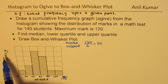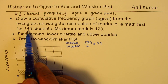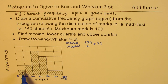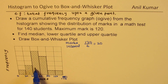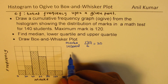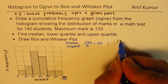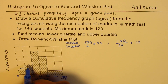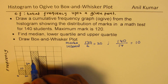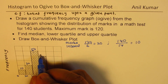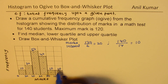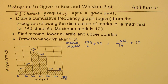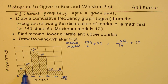On the vertical side we have frequency, which is the total number of students — 140. Counting the units, we get 14 divisions, so 140 divided by 14 gives 10 students per unit. That means each unit represents 10 students. So from the histogram, less than 20 marks means 10 students have scored in that range.